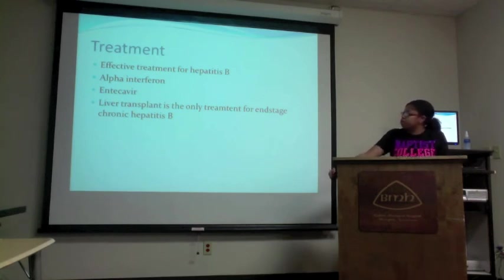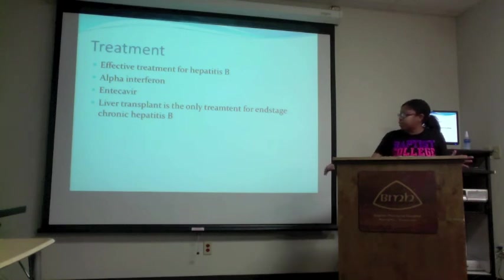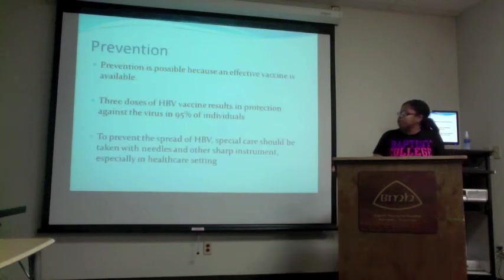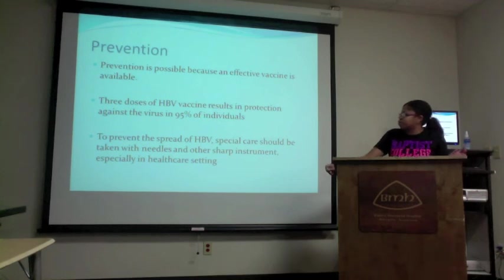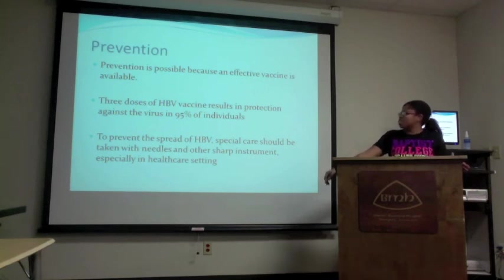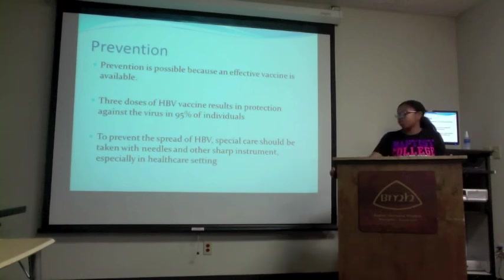Effective treatment for hepatitis B includes alpha-interferon and entecavir. Liver transplant is the only treatment for end-stage chronic hepatitis B. Prevention is possible because an effective vaccine is available — three doses of the hepatitis B vaccine result in protection against the virus in 95% of individuals. To prevent the spread of HBV, special care should be taken with needles and other sharp instruments, especially in healthcare settings.